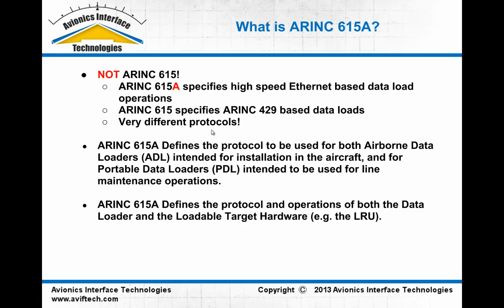What is ERINC-615A? I'll start out by saying what it's not, because I think there's some confusion sometimes. ERINC-615A is not ERINC-615. 615A specifies data loads — specifically a high-speed data loader that uses Ethernet for the interconnection between the data loader unit and the loadable targets on the avionics network. By contrast, ERINC-615, which is a little bit older of a specification, specifies data loads to be executed over ERINC-429 links between the data loader and the loadable targets.